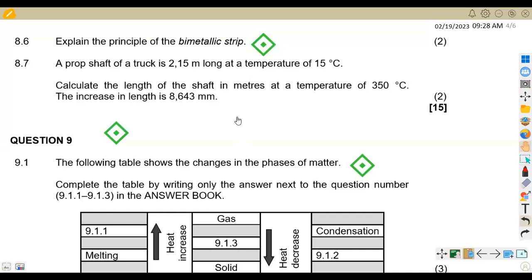Let's check the other part of the question, which is on 8.7. We are given that a prop shaft of a truck is 2.15 meters long at a temperature of 15 degrees Celsius. This is the original length of the shaft. Calculate the length of the shaft in meters at a temperature of 350. This is our T2. And the increase in length is 8,643 millimeters. We can convert this to meters. Milli means times 10 to the exponent of negative 3, which is going to give you 0.008643 in meters.